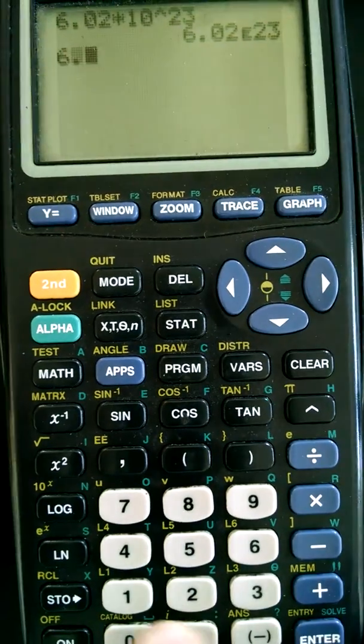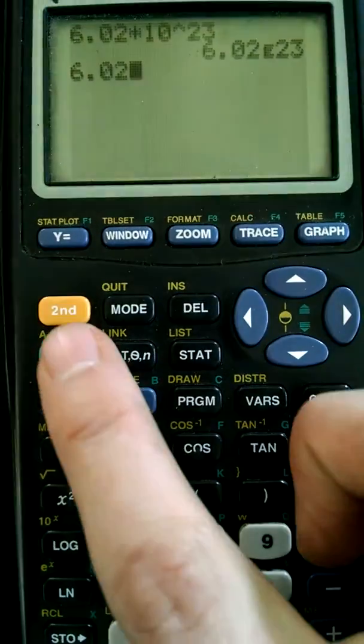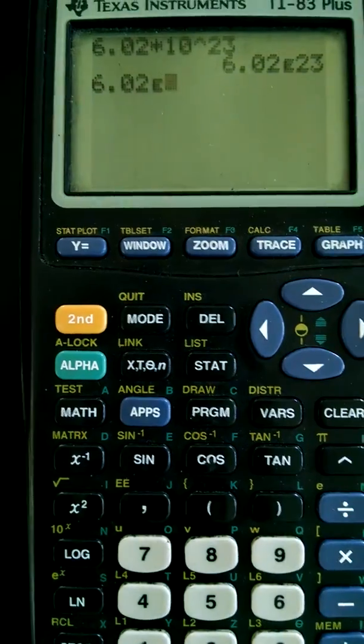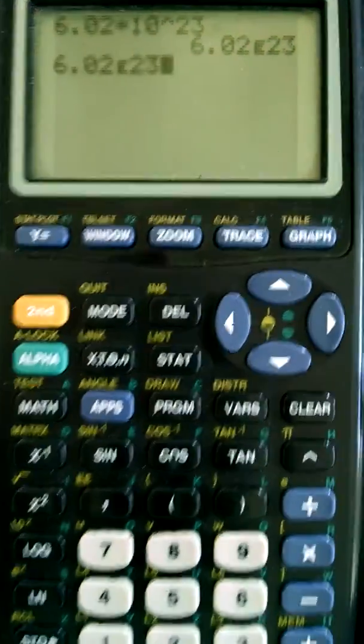So the E button: we do the same thing, 6.02. It's much easier. Instead of hitting all the other buttons, just hit second and comma, and note the E appears.